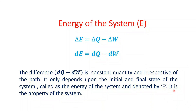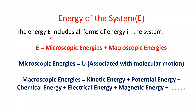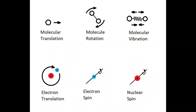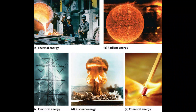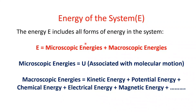The energy E is a property of the system and includes all forms of energy. It can be written as E equals microscopic forms of energy plus macroscopic forms of energy. Microscopic energy is normally denoted by U and is associated with molecular motions — rotational, linear, and vibrational. Macroscopic energies are those observable with the naked eye: kinetic energy, potential energy, chemical energy, electrical energy, and magnetic energy.